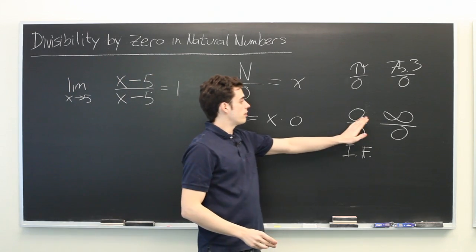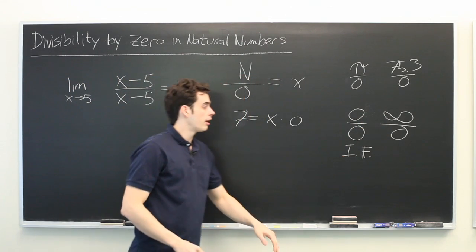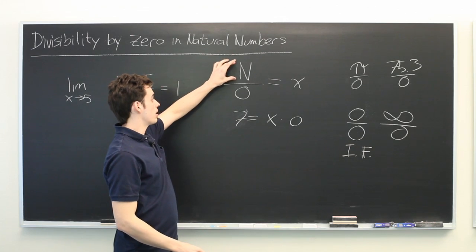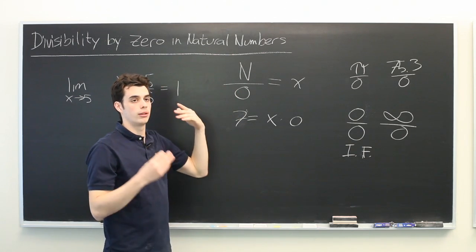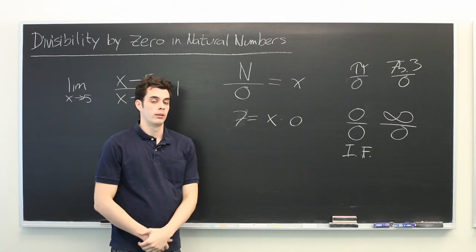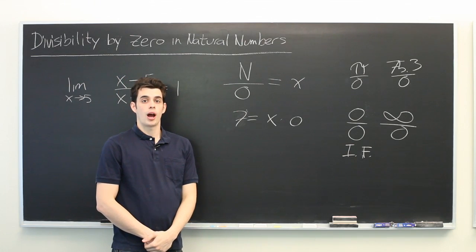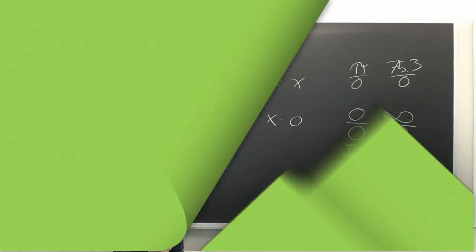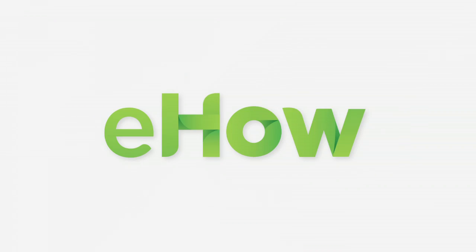So, other than these unusual corner cases, the vast majority of the time when you see a natural number over zero, the operation is simply undefined, and there is no answer. This is Ryan Malloy, and we've just discussed divisibility by zero in the natural numbers.